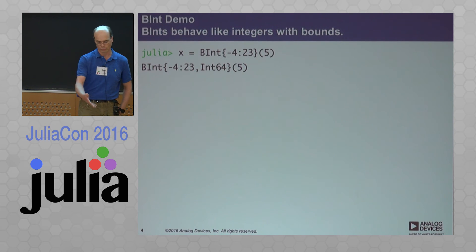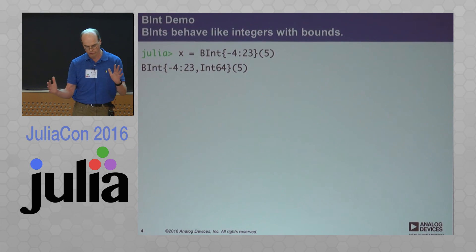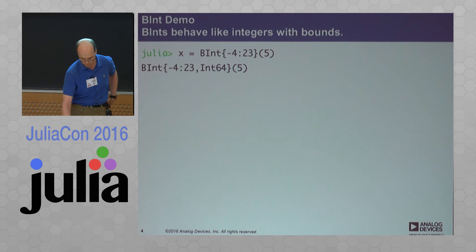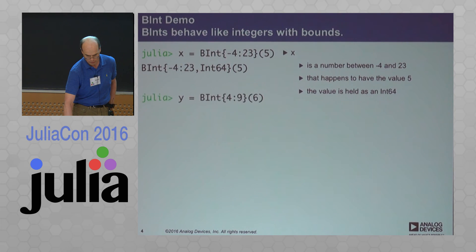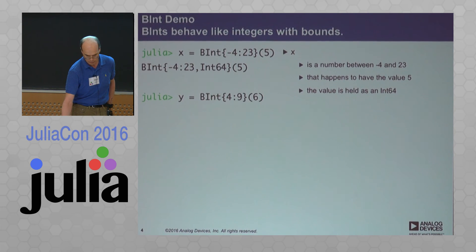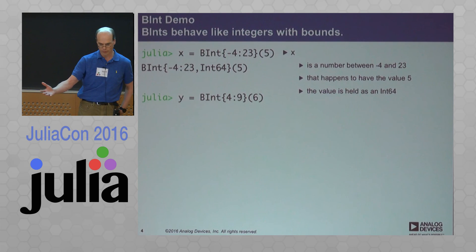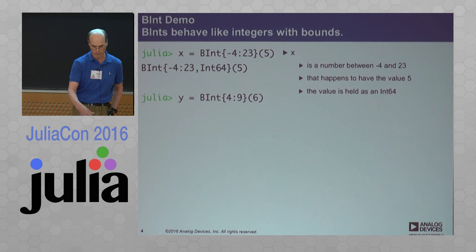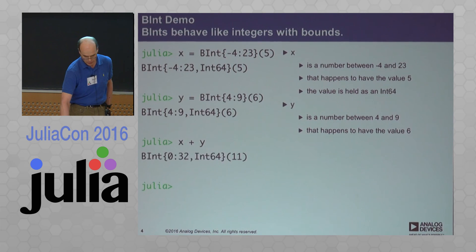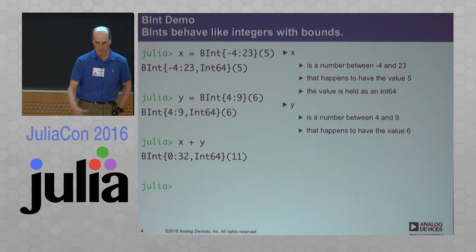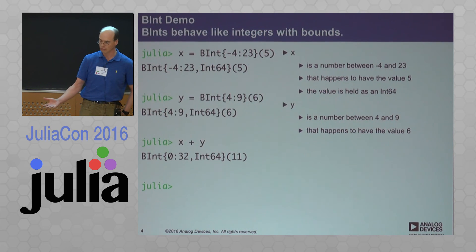It figures out what type you need to store the value. So this is an int64 — I have a 64-bit machine, so x is a number held in a 64-bit space. Y is another number which happens to be the value 6 but could be anywhere between 4 and 9. I add these two numbers, I add 5 and 6, I get 11, but it could have a range of 0 to 32.